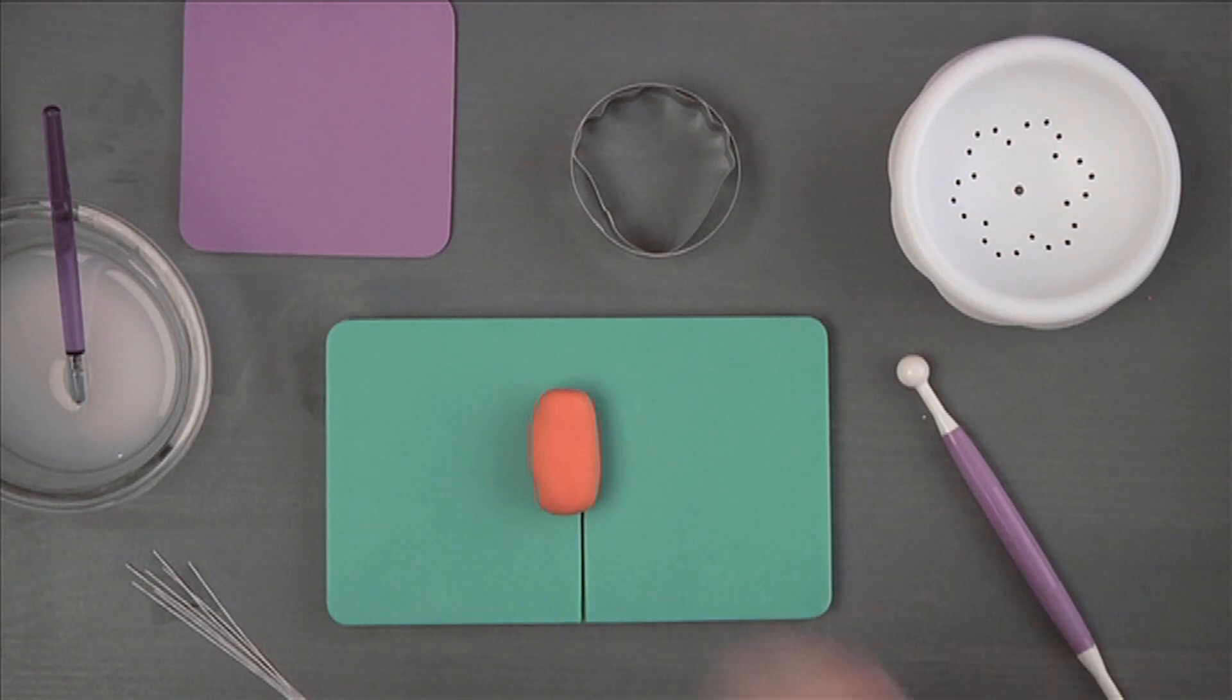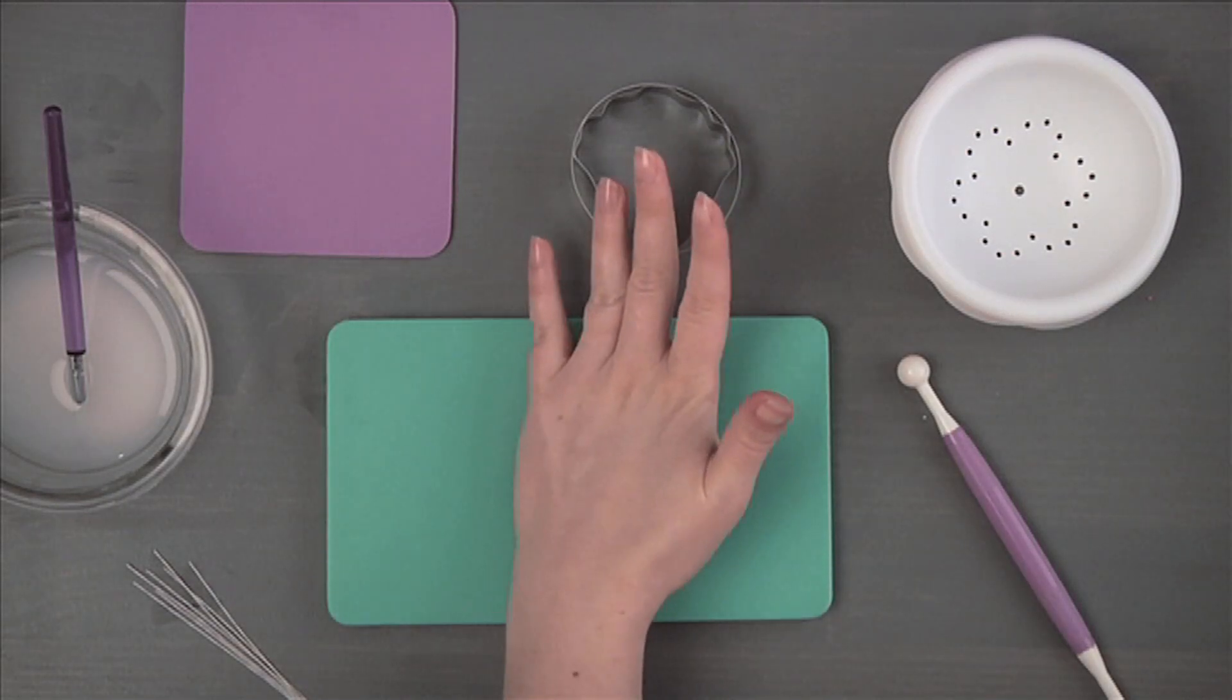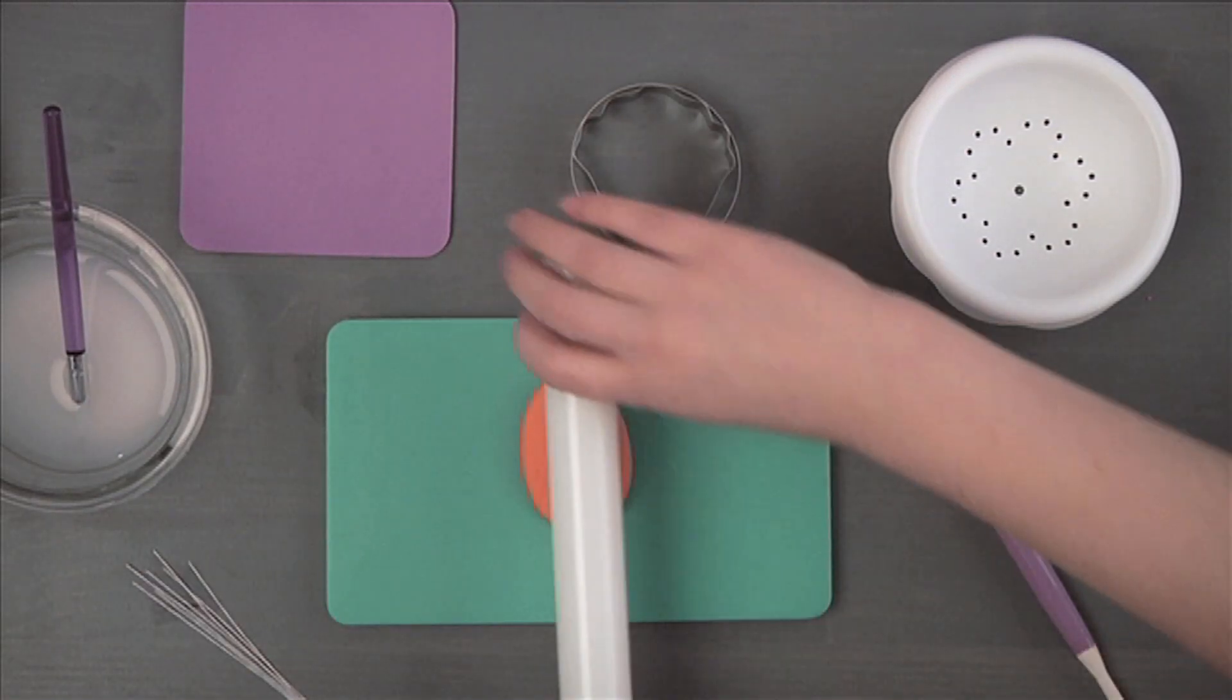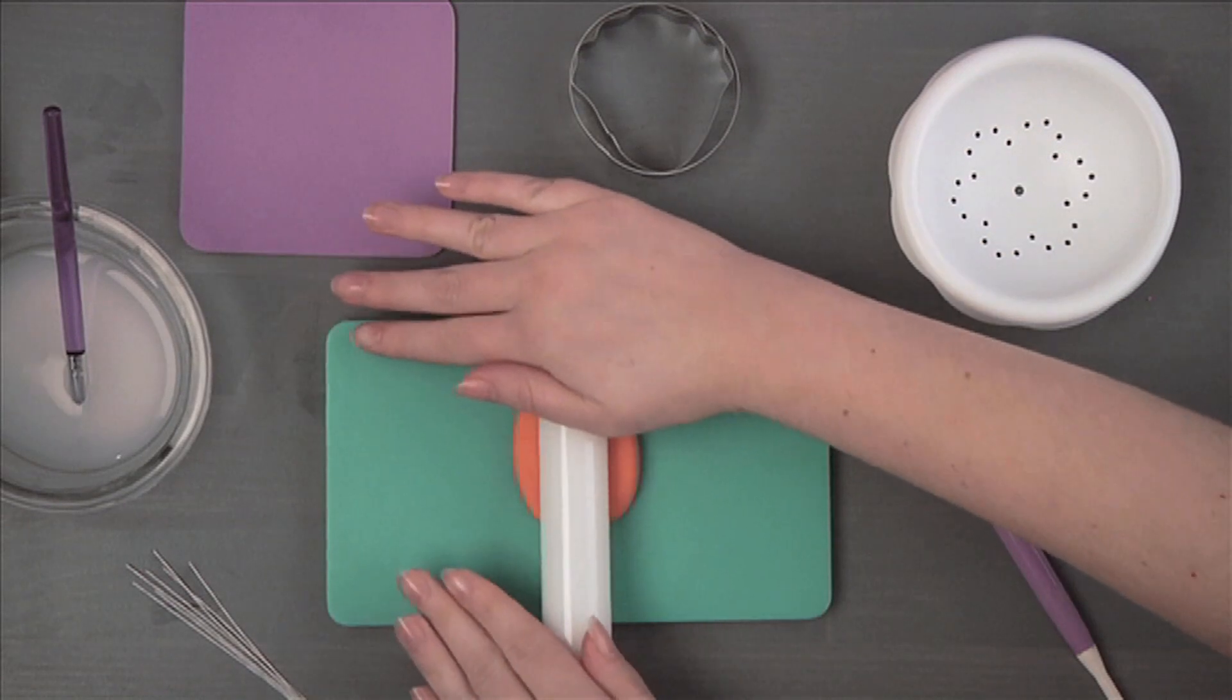Shape a 1 1⁄2 inch ball of red gum paste into a log about 2 inches long. Roll to less than 1/16th of an inch thick over the groove of a cornstarch dusted impression mat, forming a ridge.